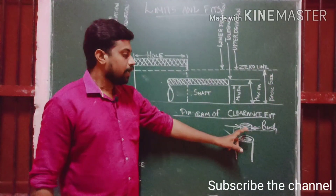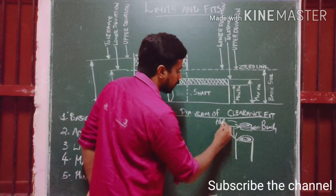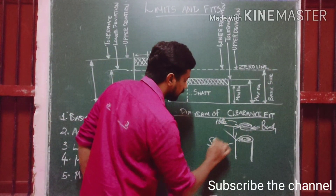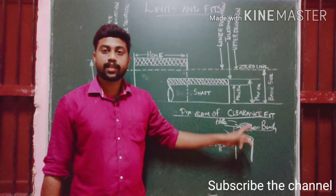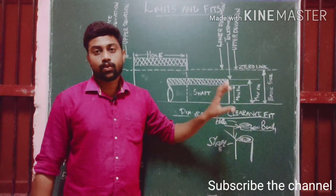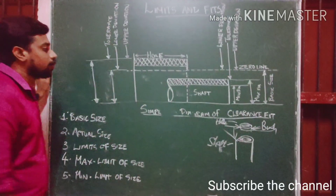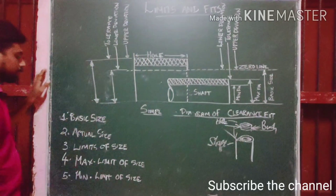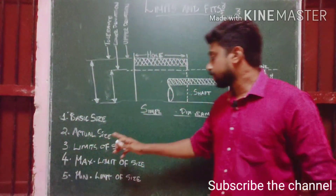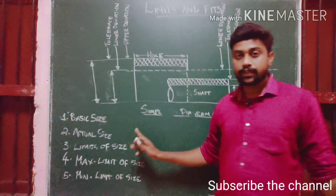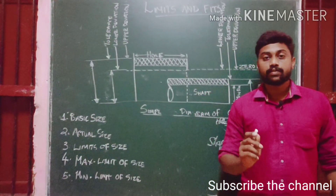There is a hole, here is a shaft. This shaft will be fitted into the hole. The first things we will learn are: size — basic size, actual size, limit of size, maximum limit of size, and minimum limit of size.